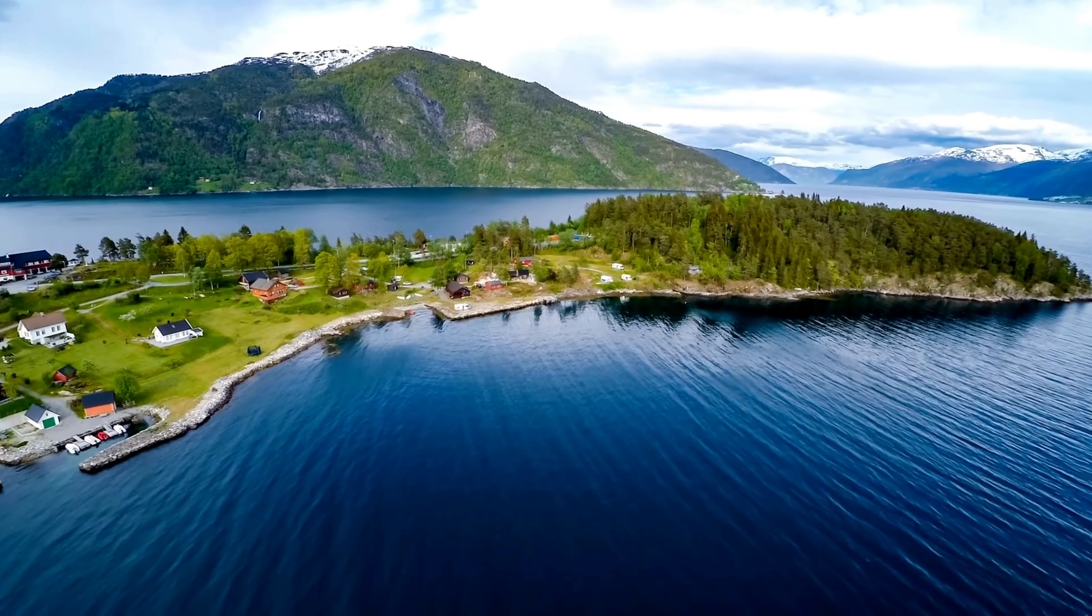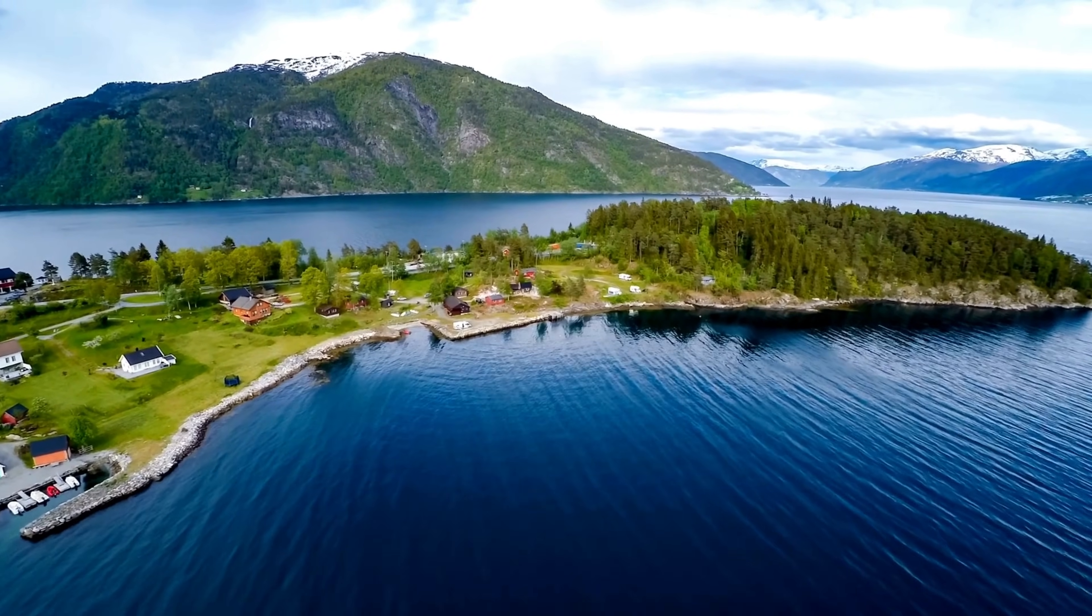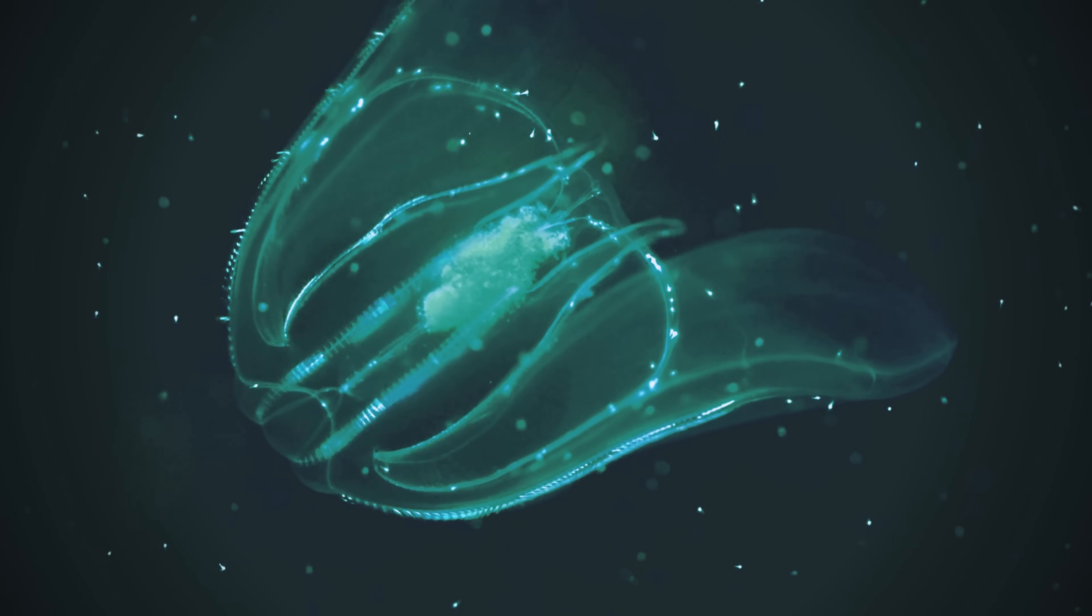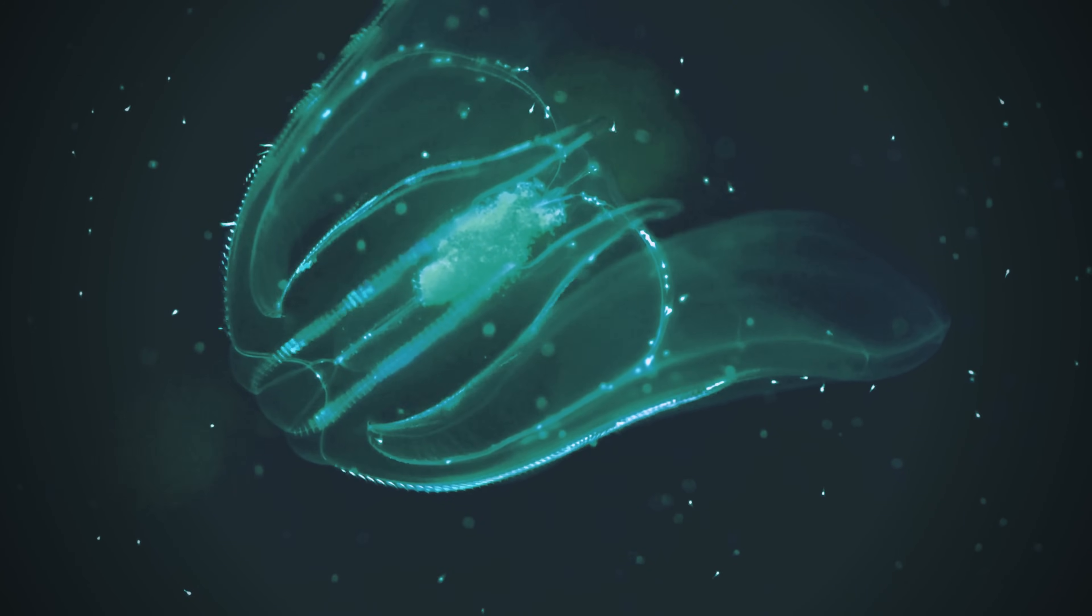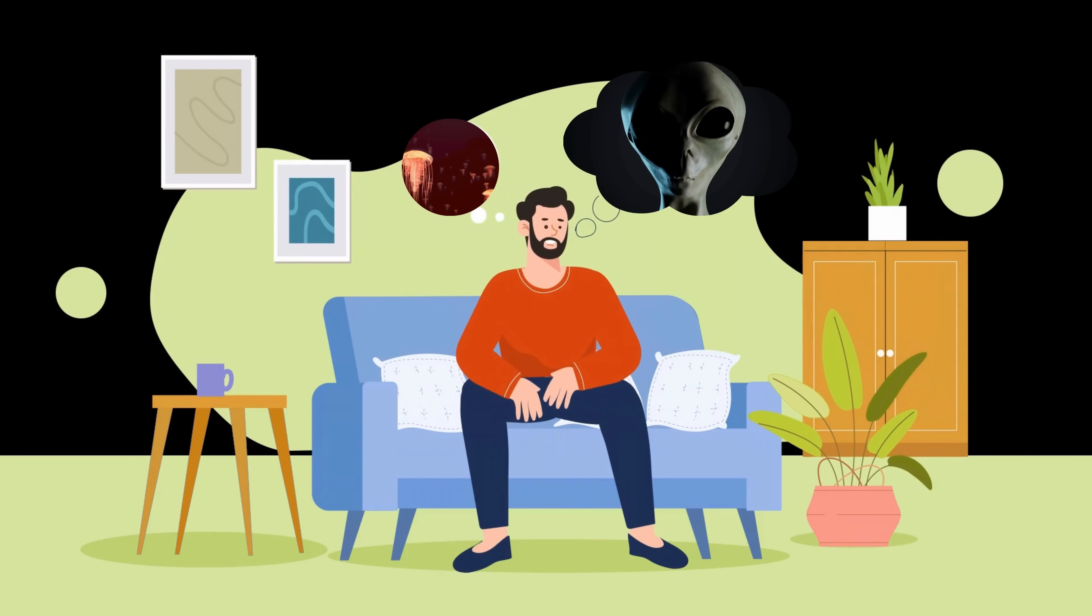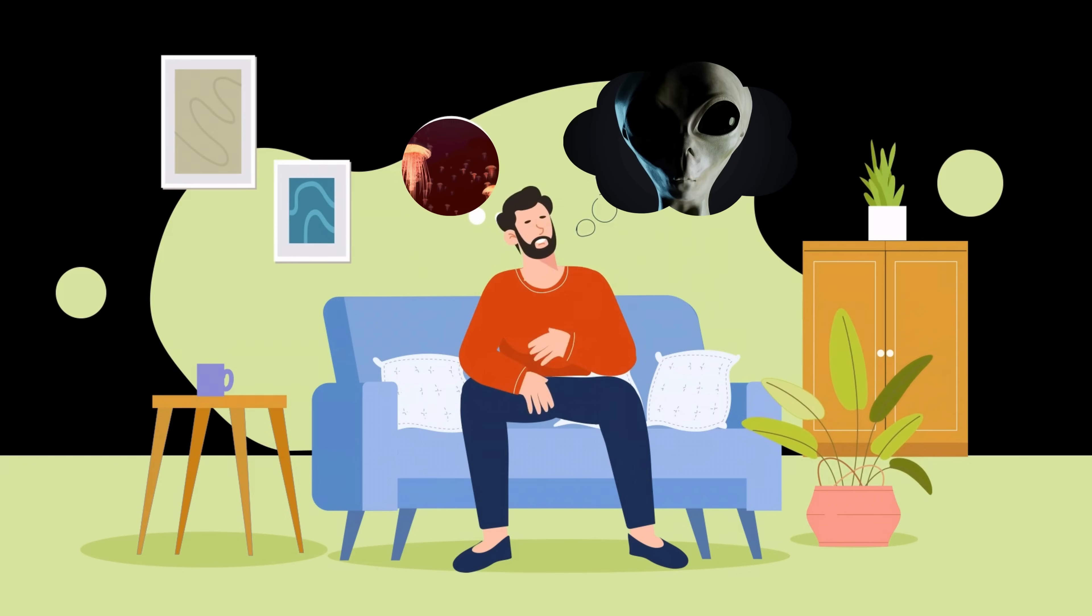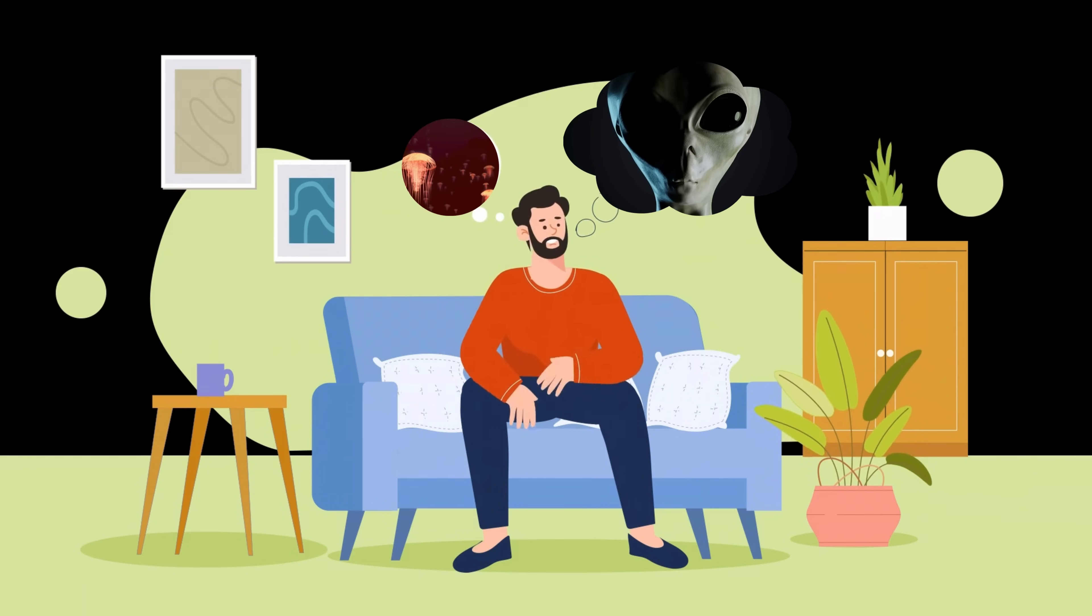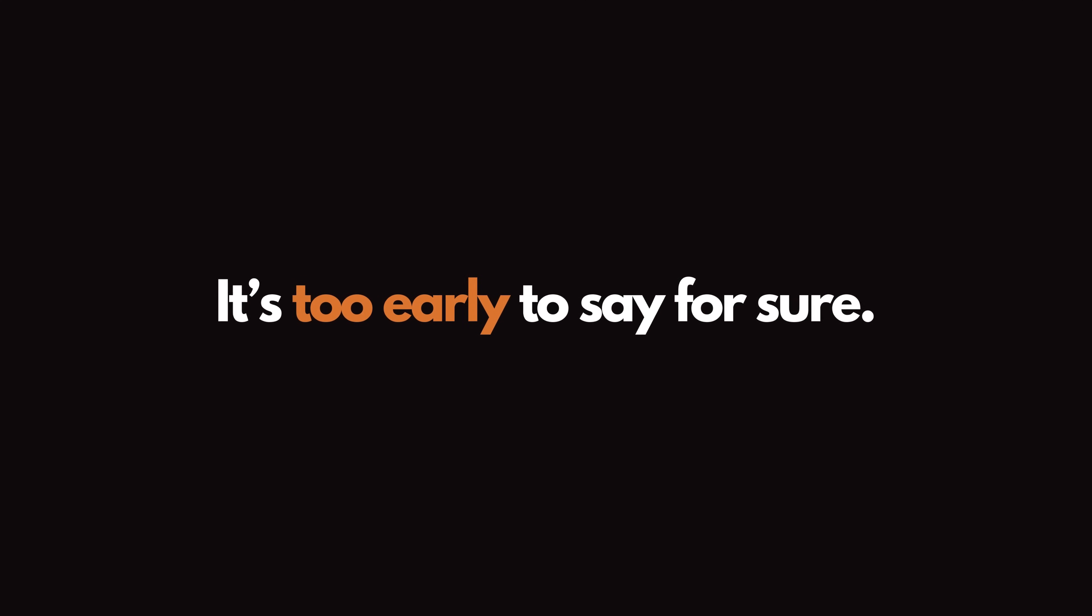While life on Earth thrives in oxygen-rich environments, life on Hycean worlds could live in deep oceans under thick atmospheres. But what does this really mean? Are we seeing signs of life or just the complex chemistry of an alien world? Right now, it's too early to say for sure.